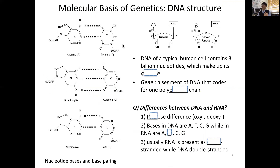Let's get into more detail on the molecular basis of DNA structure. Comparing ribose and deoxyribose, the difference lies at carbon number two — one has an OH and the other has an H. Adenine and thymine form two hydrogen bonds, making them complementary to each other, while guanine and cytosine form three hydrogen bonds. This gives us specificity for A-T or G-C pairing. In RNA, thymine is replaced by uracil; the difference between thymine and uracil is that thymine has a CH₃ group where uracil has just CH.